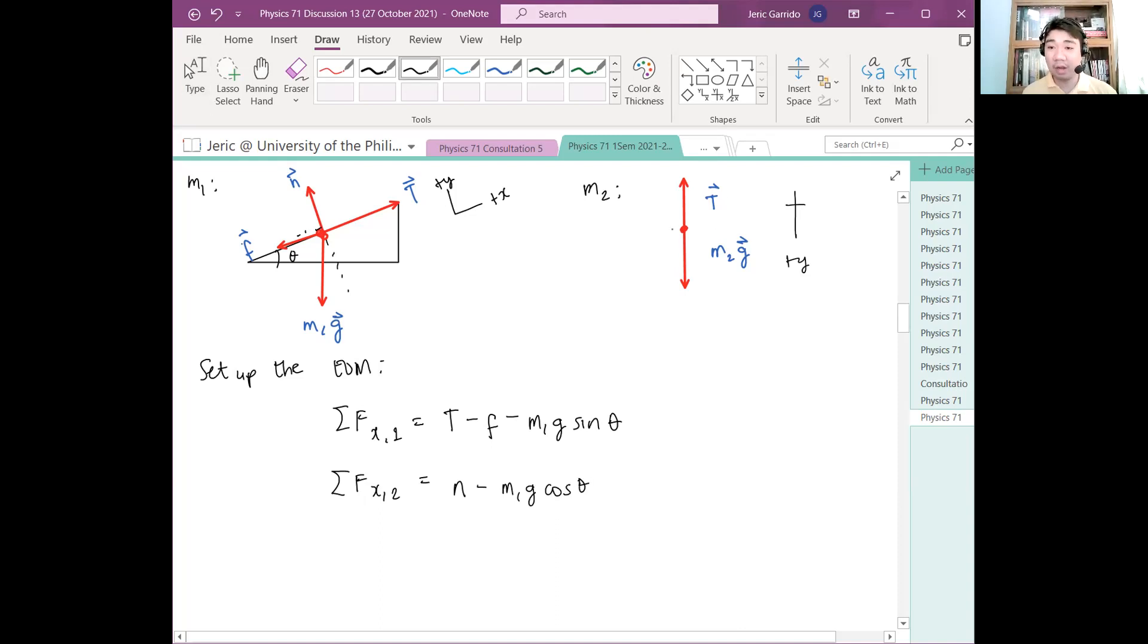Okay, so, tapos, m2 also has some contribution. So, we have, of course, wala siyang x component, we don't need to write it, but it has a y component, summation of forces acting on y for the second object, simply, m2g, which is just equal to, this is m1a, because it's accelerating with some magnitude a. This should be zero. Bakit zero yan? Bakit zero yung second equation? Bakit zero yan? Why should it vanish? Anong physicality nyan? Bakit dapat mamamatay ito?